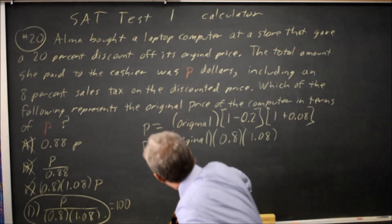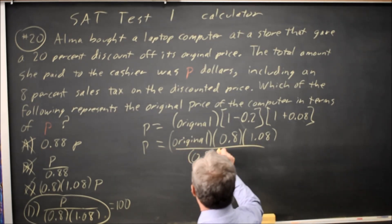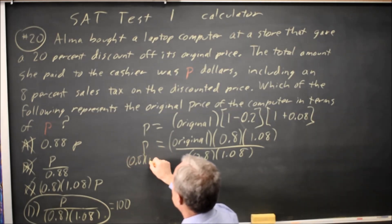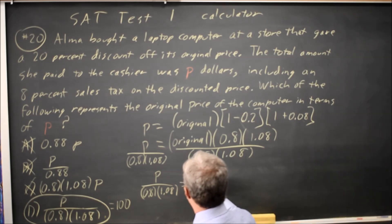To solve for the original price, I'm going to divide both sides by .8 times 1.08. And that gives me P over .8 times 1.08 equals the original.